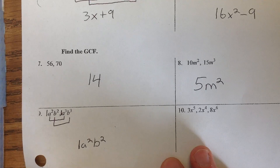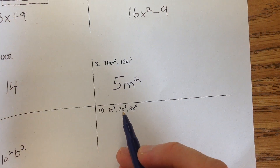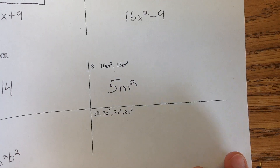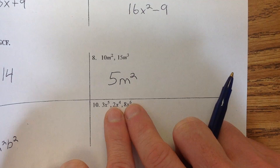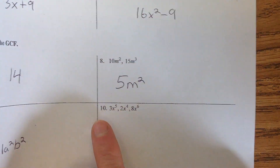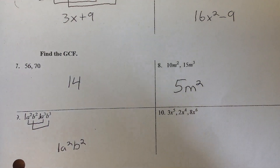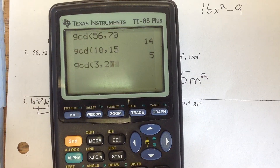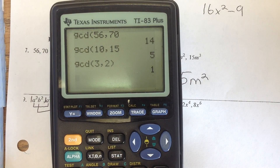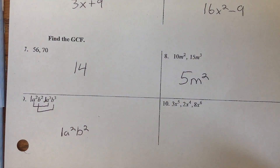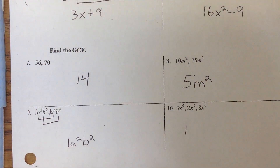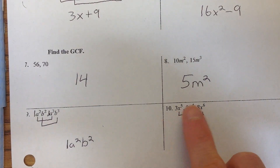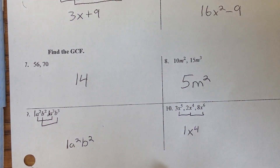Number 10: we've got 3x to the 5th, 2x to the 4th, and 8x to the 6th. When there are 3 terms, your GCF has to work for all 3. You might say 2 and 8 share a 2, but we can't take a 2 out of the 3. The largest number we can take out of all three is just 1. We can verify on the calculator with GCD of 3 and 2 — the GCF is 1. Then looking at x to the 5th, x to the 4th, and x to the 6th, we take the smallest, which is x to the 4th.